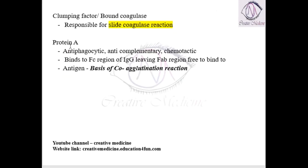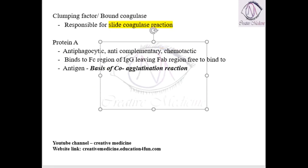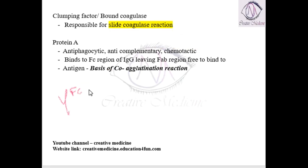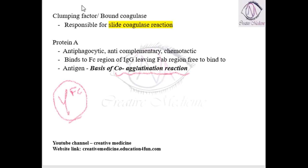We have one more factor called Protein A. Protein A is anti-phagocytic, anti-complementary, and chemotactic. It binds to the Fc region of IgG, leaving behind the Fab region free. Thus, it is important for the coagulase reaction which occurs in Staphylococcus aureus.